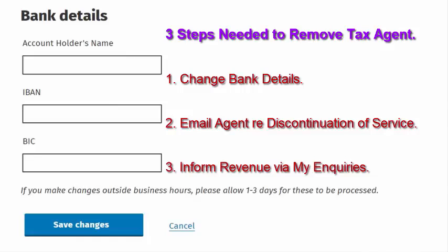The second step is to email your tax agent to advise them that you have amended the bank details on your Revenue My Account and that you no longer wish them to act on your behalf with immediate effect. The third step is to advise Revenue that the agent — including their name and address — is no longer authorized to act on your behalf.